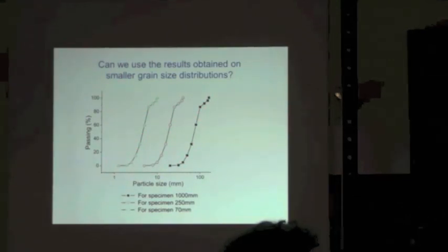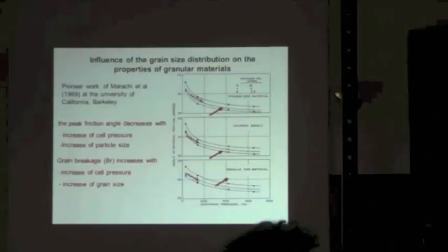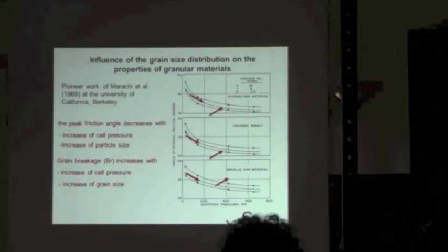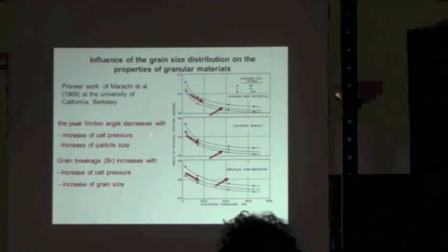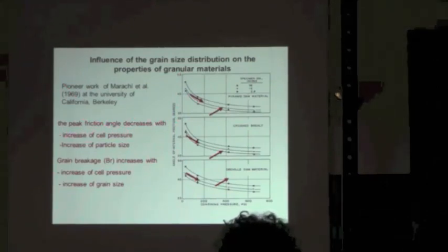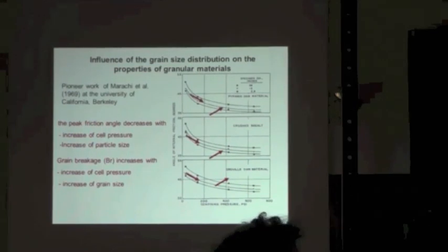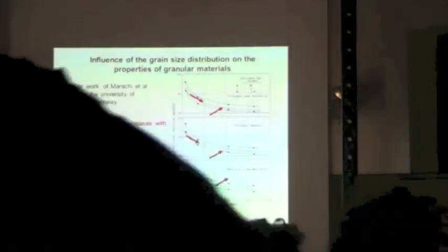Can we do that? This has been done quite a long time ago. Here you have one of the first results obtained on this kind of study by Marachi and co-workers at the University of California. They concentrate on the peak friction angle, and this shows that the peak friction angle decreases with the increase of cell pressure — a well-known result — but also that the peak friction angle decreases with the increase of particle size. Working on homoesthetic gradations, this shows that small samples have higher strength than big samples.